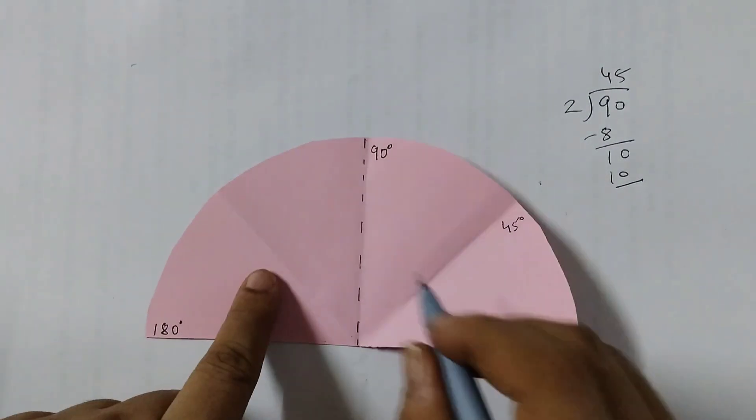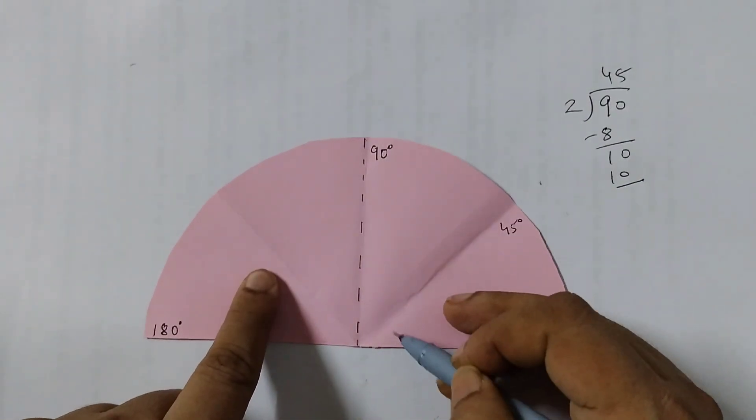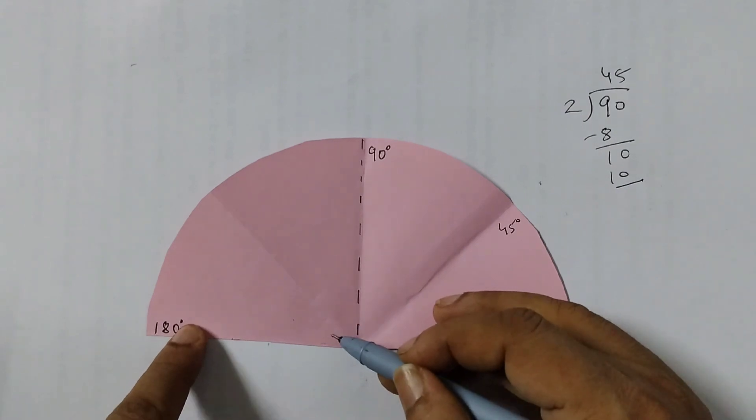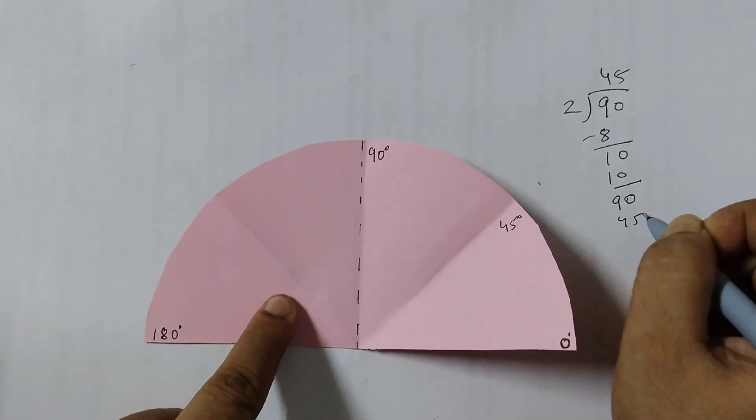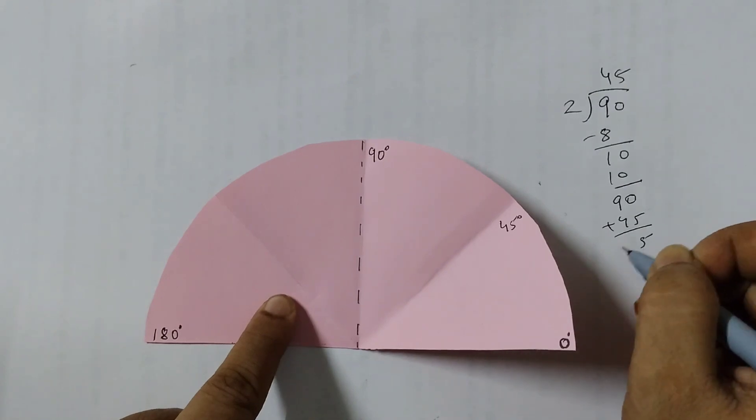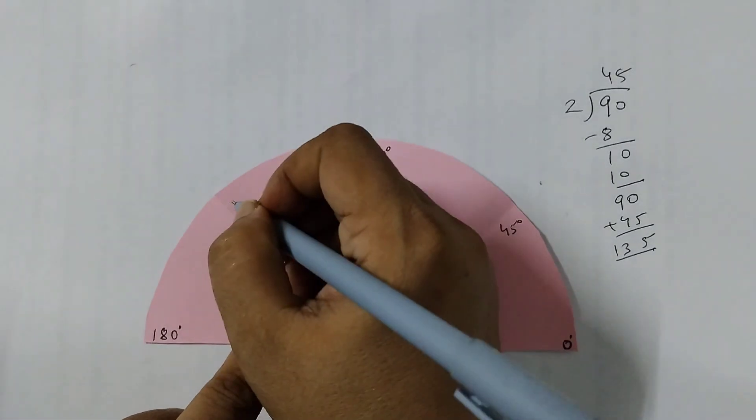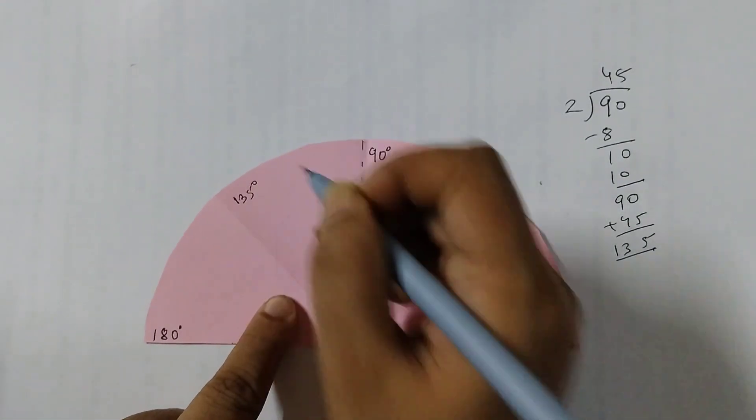And we can find out this angle as well. Each of these angles is 45 degrees, so 90 plus 45 equals 135. This angle is 135 degrees.